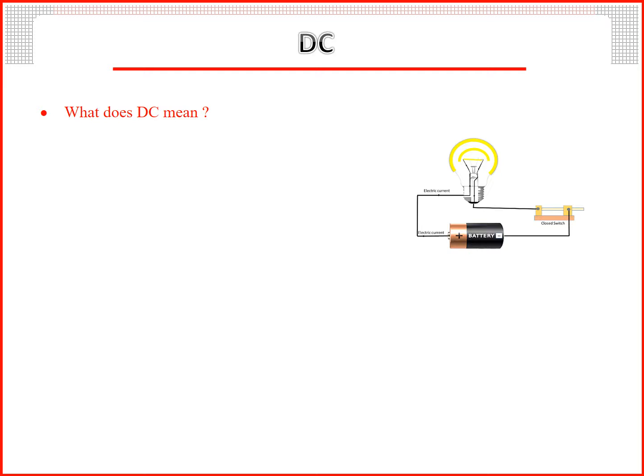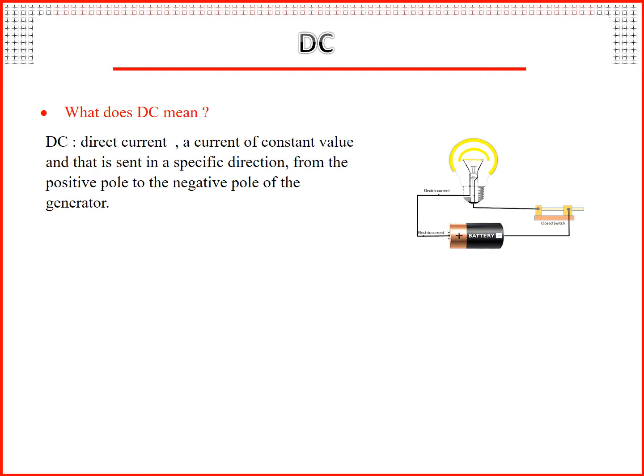What does DC mean? DC means direct current, a current of constant value that is sent in a specific direction from the positive pole to the negative pole of the generator. What does DC voltage mean? The voltage across the source is constant with time.